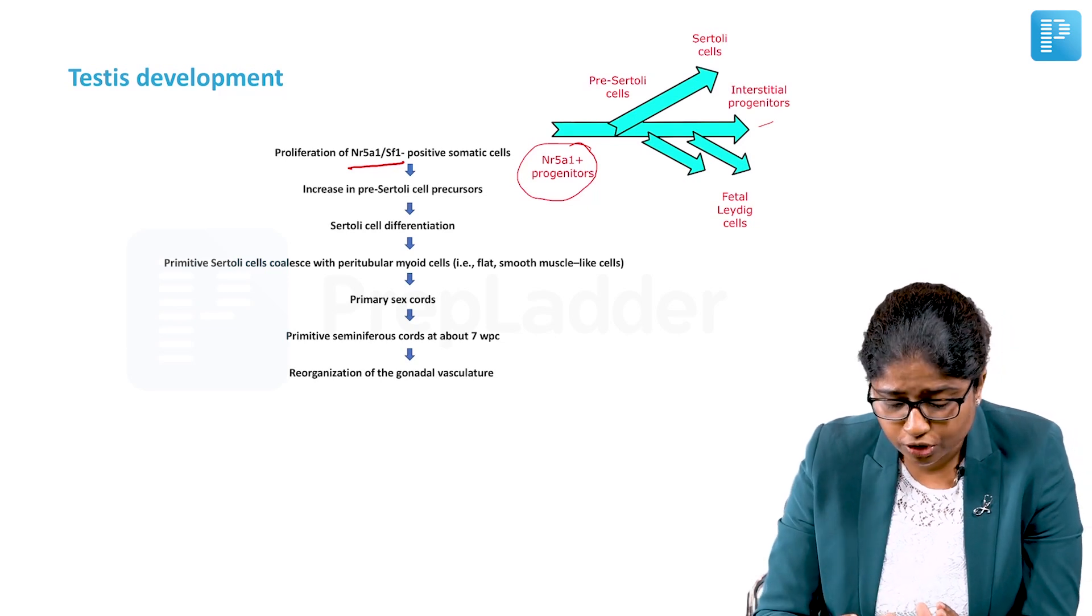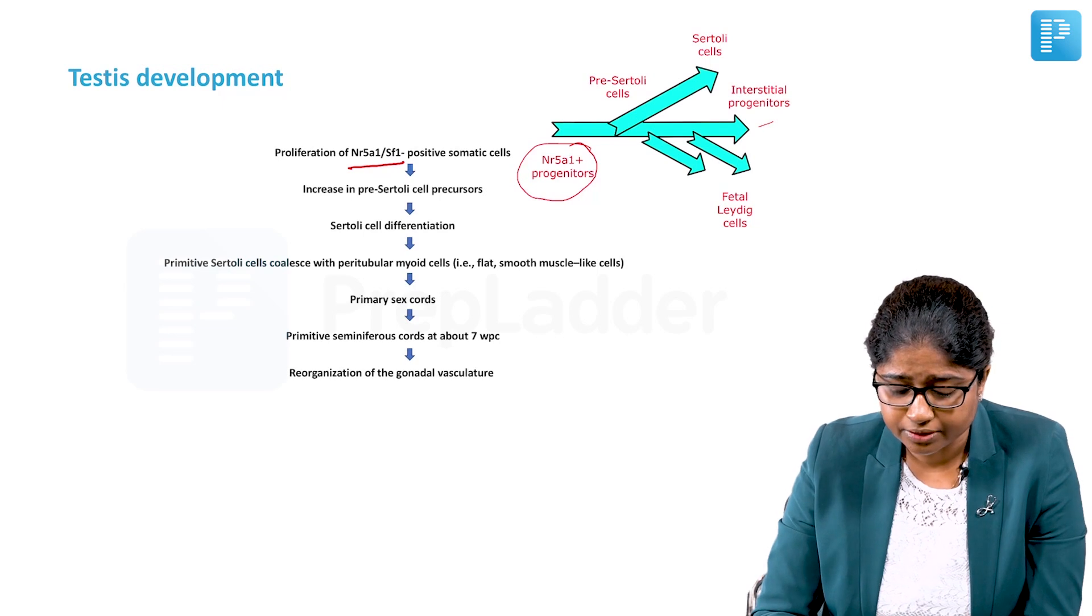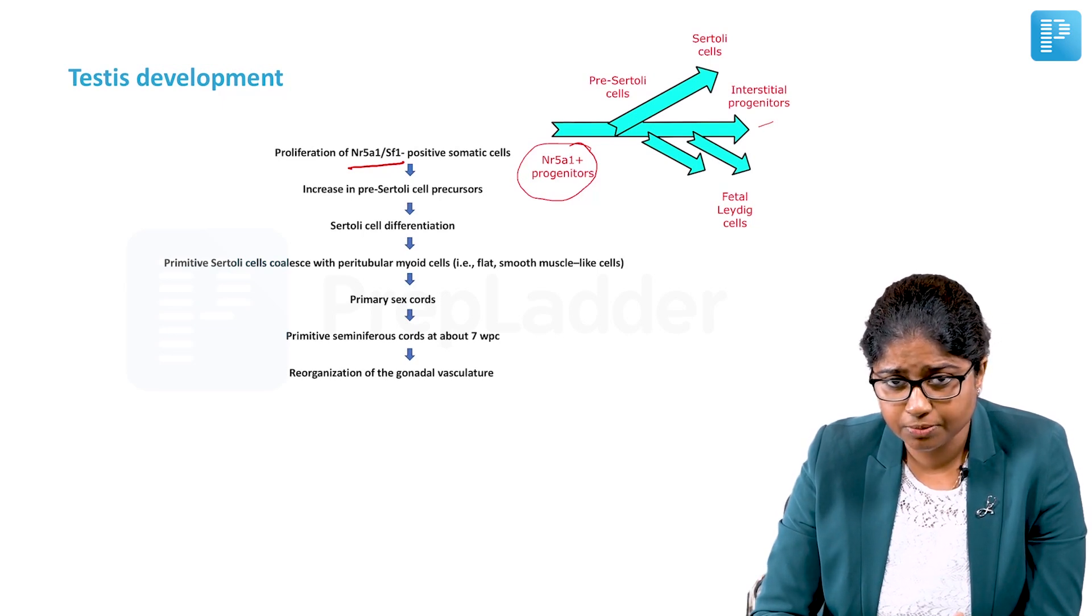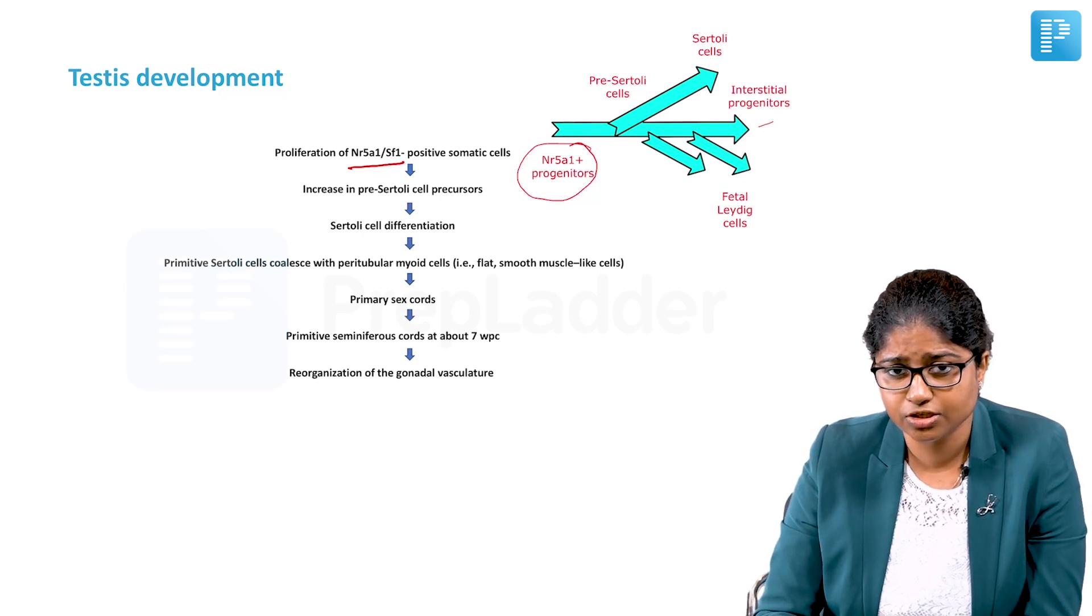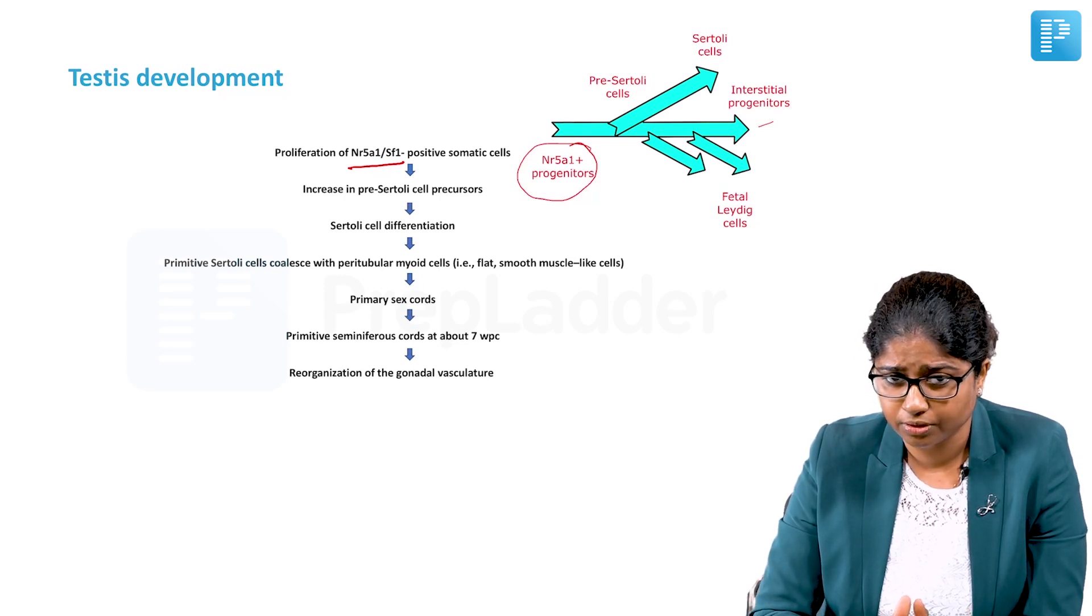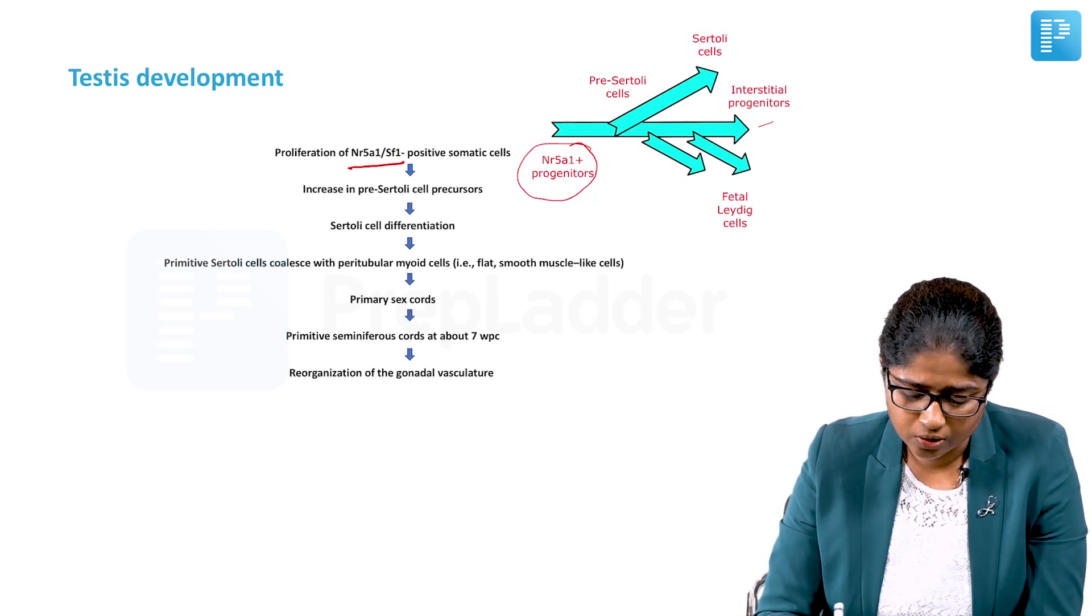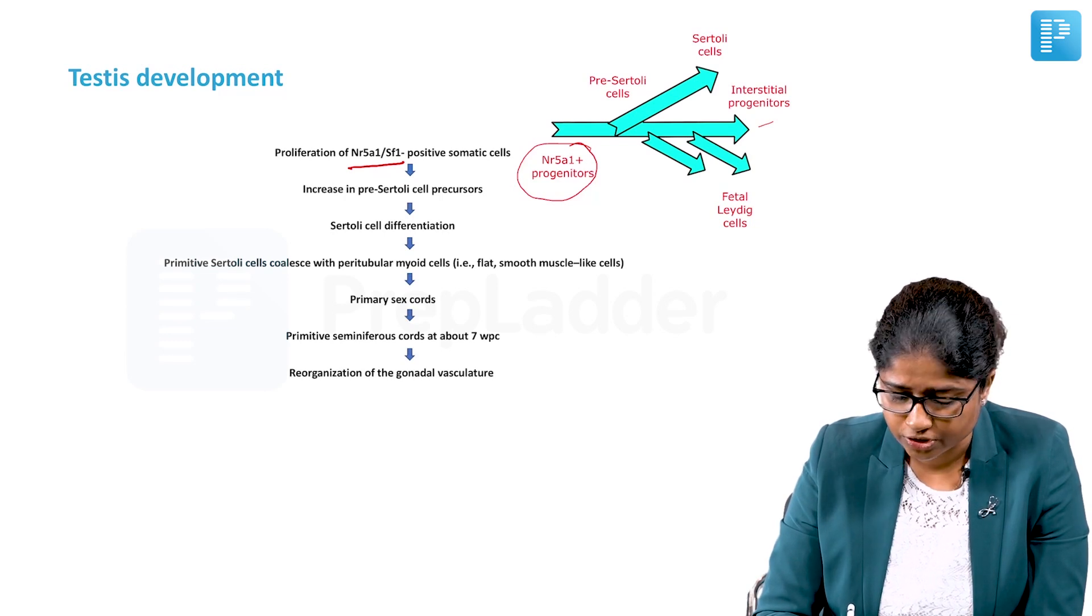First you have a population of cells which is NR5A positive and they start to proliferate. Then there is an increase in the pre-Sertoli cell precursors and Sertoli cell differentiation. Then those merge with the peritubular myoid cells to form the primitive primary sex cords. These form the primitive seminiferous cords around 7 weeks, and then there is a reorganization of the gonadal vasculature.